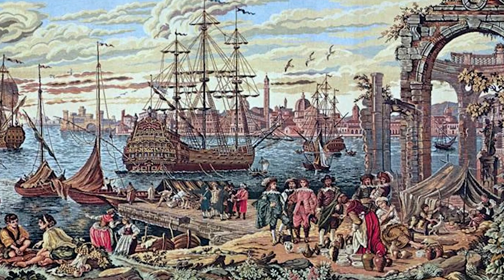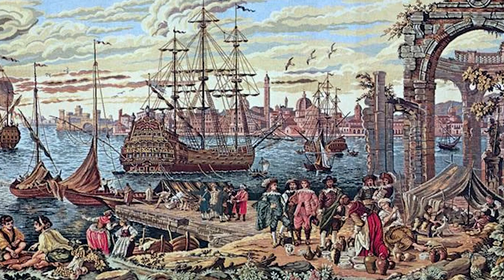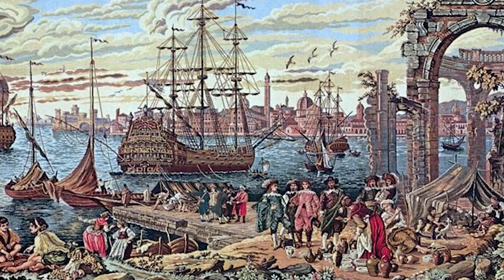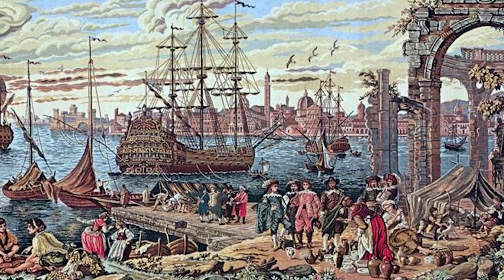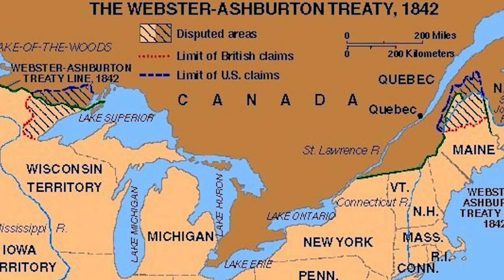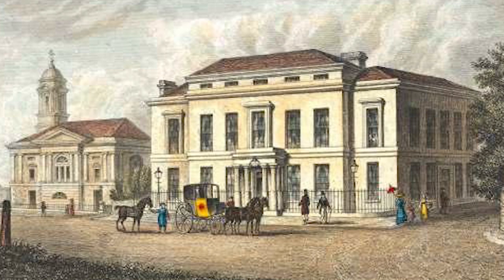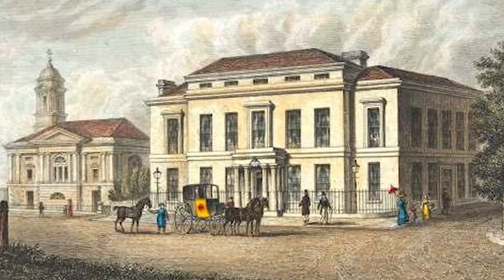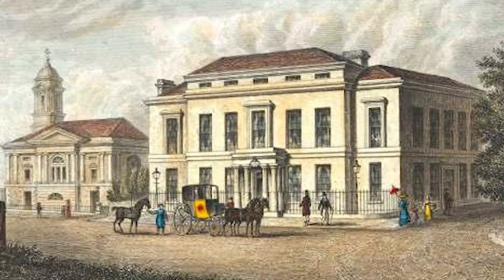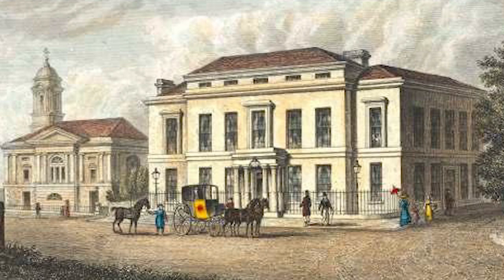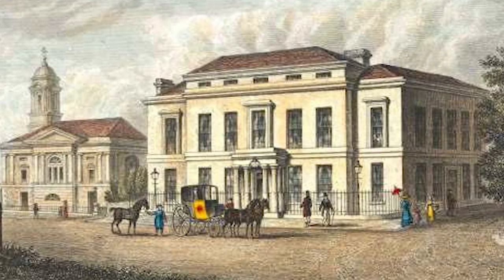Maine militia occupied points all along the Aroostook Territory, raising upwards of 11,000 men. Neither nation wanted a war that would have greatly interfered with trade, and a compromise was finally reached in the Webster-Ashburton Treaty of 1842. This treaty settled land disputes along the Maine, Michigan, Minnesota, and New Hampshire borders with British North America. The British retained the northern area of the disputed territory in Maine, which included the Halifax Road — the key to year-round overland communications between Quebec and Nova Scotia.